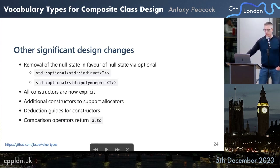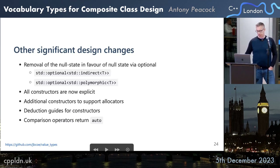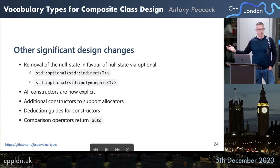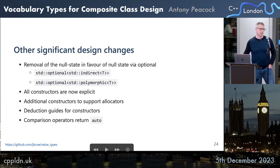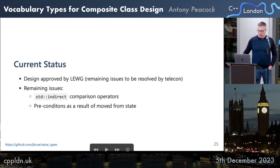We've provided additional constructors to support allocators and also deduction guides. Since C++17 you can say std::indirect and pass in the values to construct it without being explicit about the type — the compiler will do that deduction for you. And the comparison operators return auto, although there has been some discussion around that which we'll come back to.